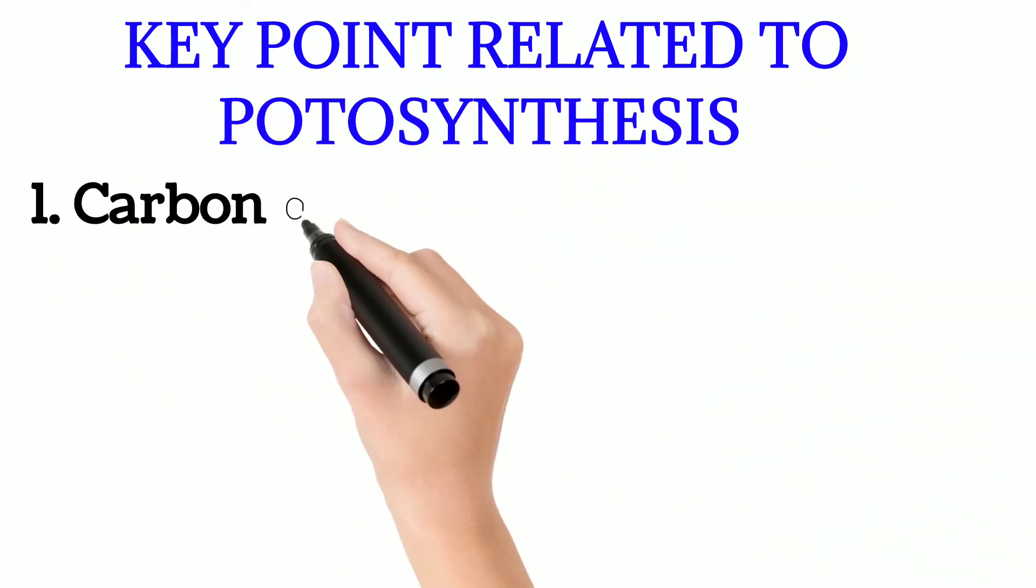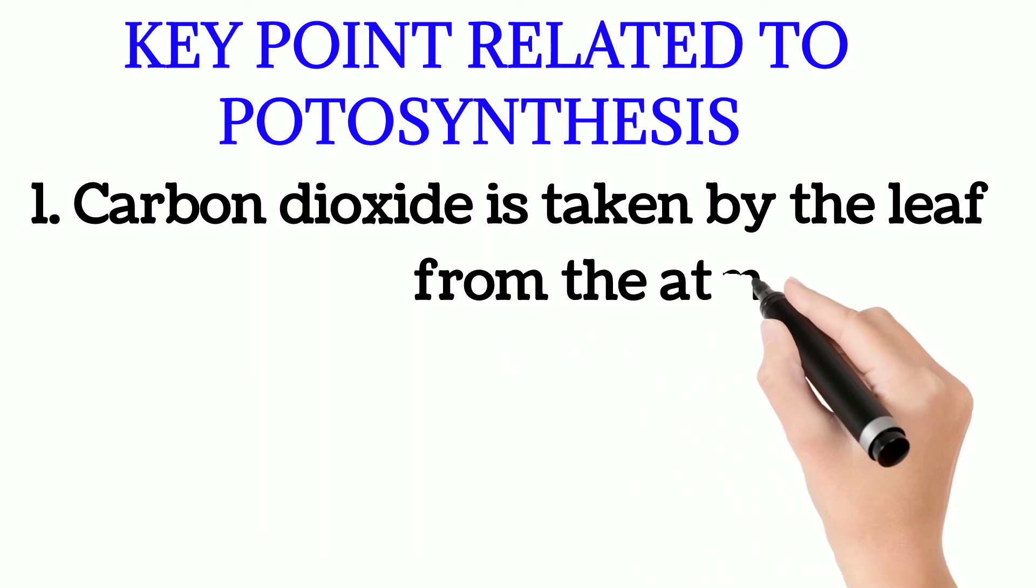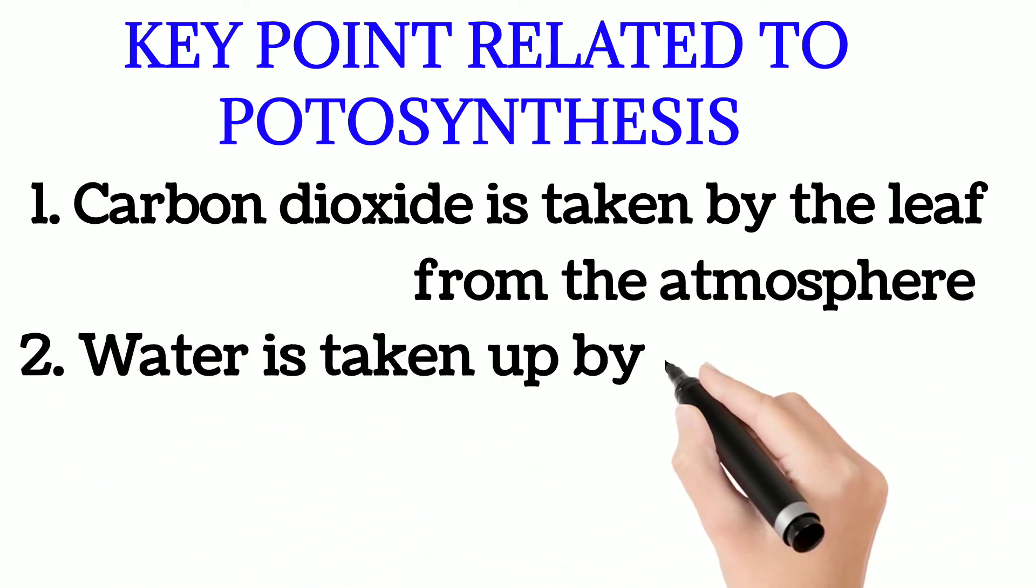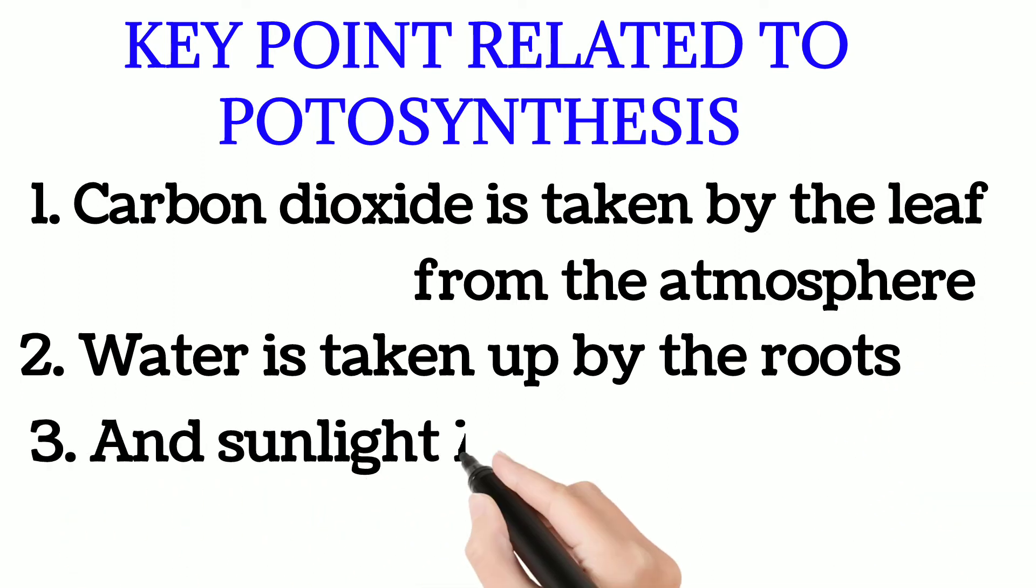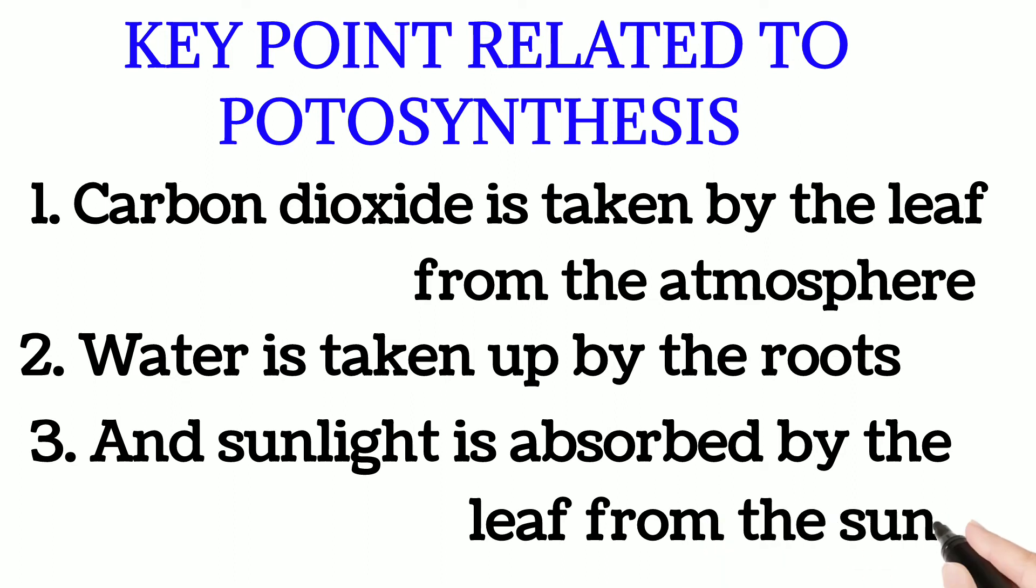Now I will discuss key points related to photosynthesis. Number one: carbon dioxide is taken by the leaf from the atmosphere. Number two: water is taken up by the roots. Number three: sunlight is absorbed by the leaf from the sun.